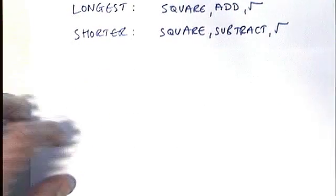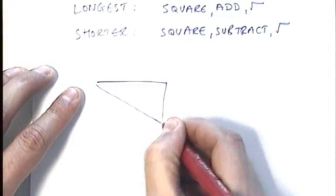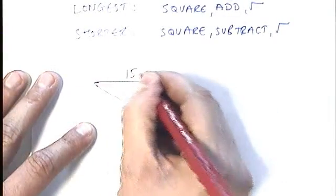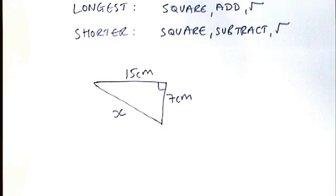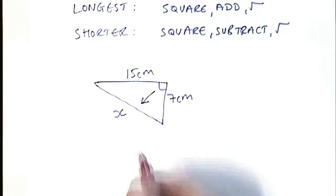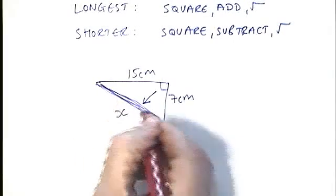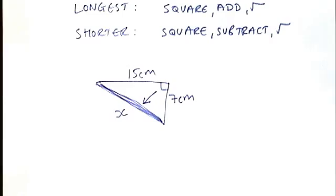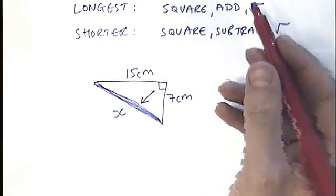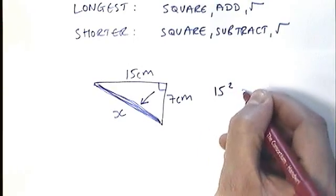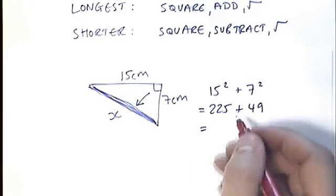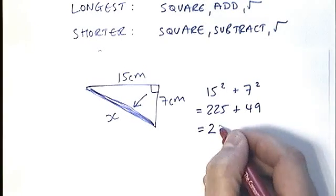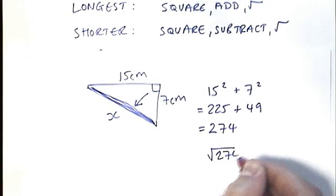Here's another example with 15 cm, 7 cm, and x. The longest side is opposite the right angle — the hypotenuse — and in this case I am asked to find that longest side. So I use the add rule: square the numbers I see and add them. 15² + 7² = 225 + 49 = 274. Then square root 274 to get the answer.